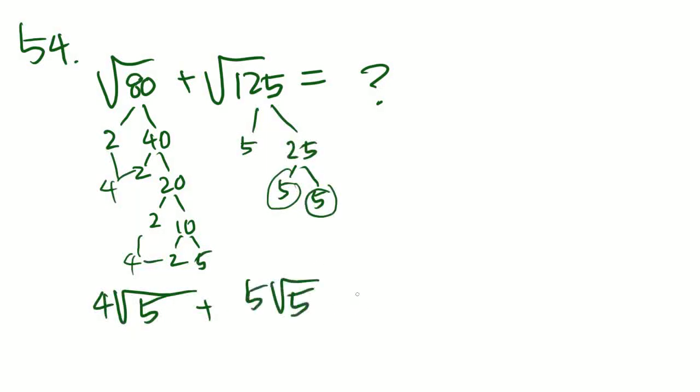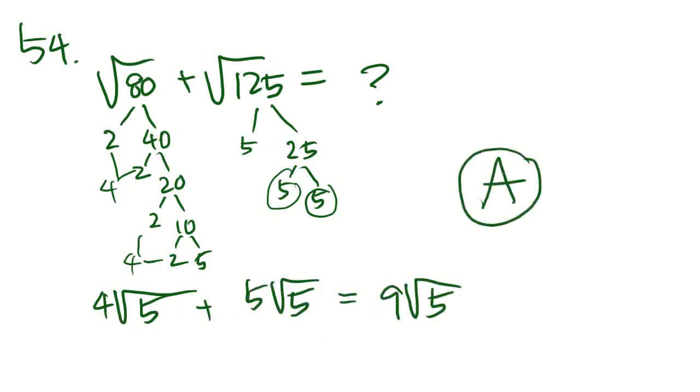So we've just simplified this equation to 4 times the square root of 5 plus 5 times the square root of 5. Add these together, and you get 9 times the square root of 5. And that is answer choice A. Boom. They didn't ask us for anything more.